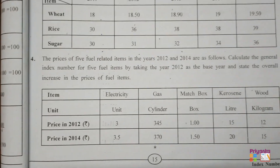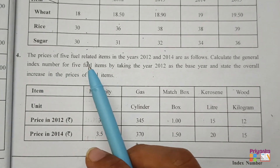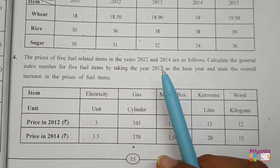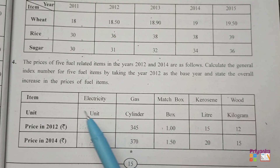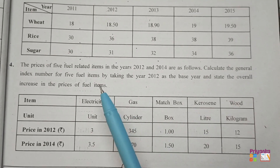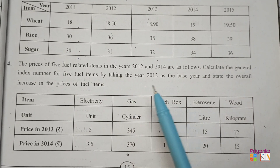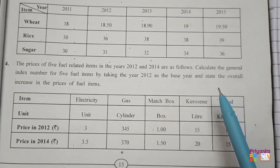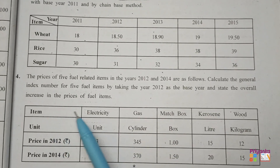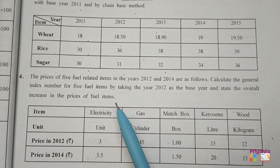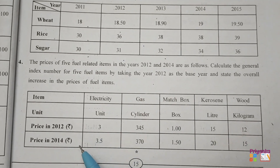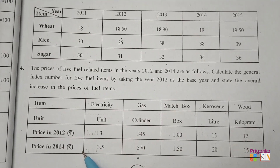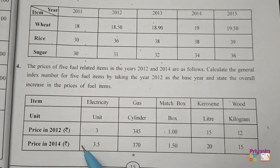Moving to Question 4: the price of five fuel-related items in the years 2012 and 2014 are given. Calculate the general index number for the five fuel items by taking 2012 as the base year, and state the overall increase in the price of fuel items. Here, prices for only two years are given, and we are to find the general index number.